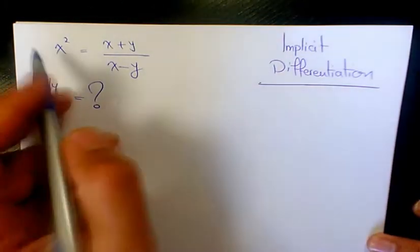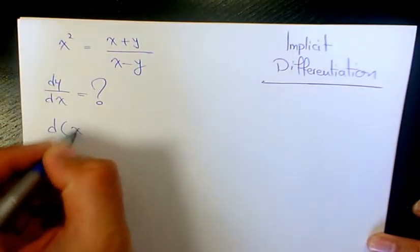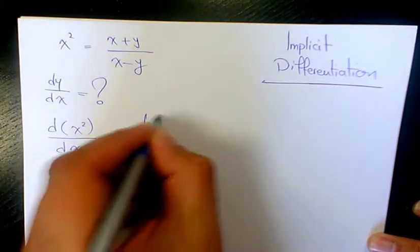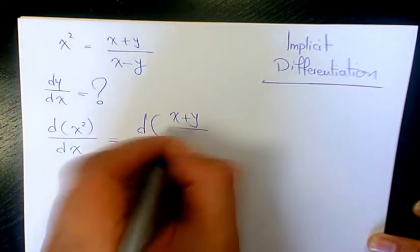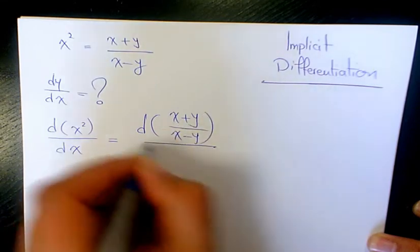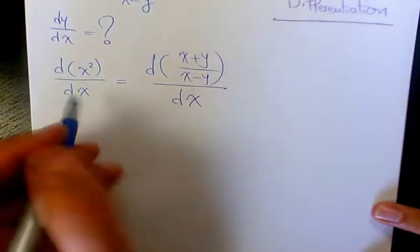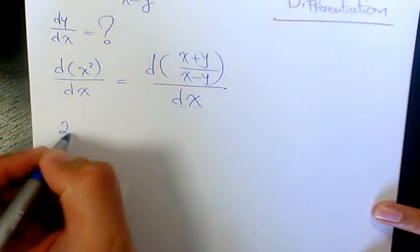So how do we do that? First of all we're gonna have derivative of x squared with respect to x equals to derivative of x plus y over x minus y with respect to x. Derivative of x squared with respect to x is gonna be 2x.